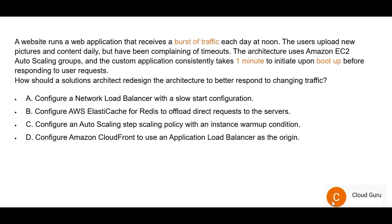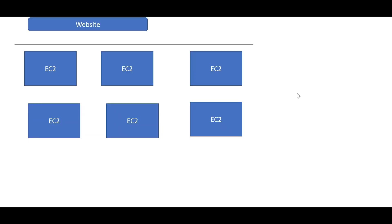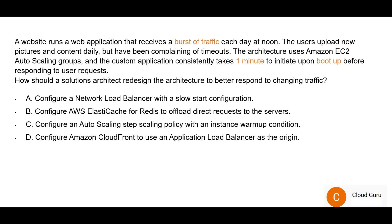Question 54 keywords: there is a burst of traffic every day at noon, users are uploading pictures and content daily, and there are timeouts occurring. The architecture uses EC2 instances in auto scaling groups. The problem is it takes one minute to boot up a new EC2 instance during a scale-out event. When a fourth instance is being created and load arrives, the boot-up time causes timeouts.